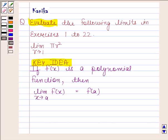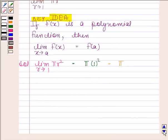Let us now begin with the solution. In this question, we have to evaluate the limit of πr² as r tends to 1. Now πr² is a polynomial. So by the key idea, the limit of πr² as r tends to 1 is equal to π times 1 squared, which equals π. Hence, the required limit is π. This completes the session.